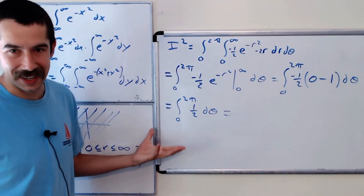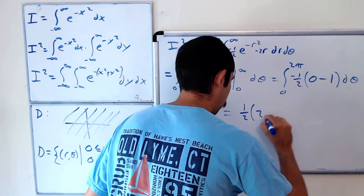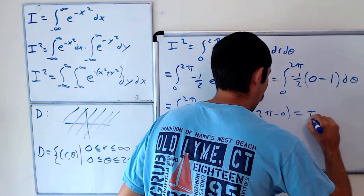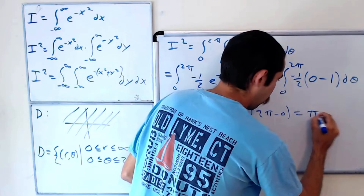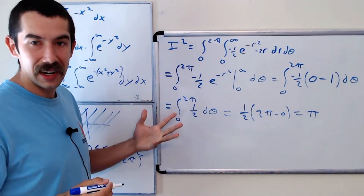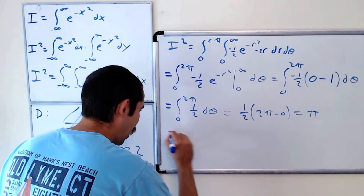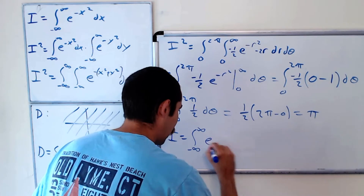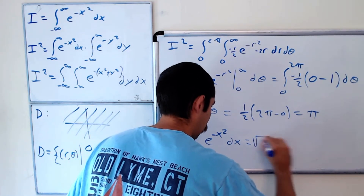This is super easy now: it's one half times two pi minus zero, which equals pi. But wait — is that our answer? No, because we just found I squared. So I is the square root of that answer. Therefore I, which equals the integral from negative infinity to infinity of e to the negative x squared dx, is equal to the square root of pi.